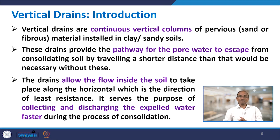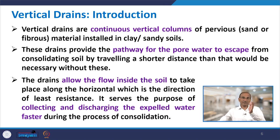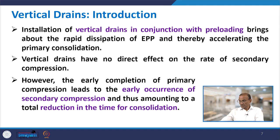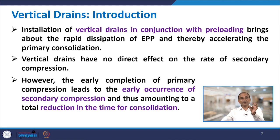These drains allow flow inside the soil to take place along the horizontal direction, which offers the least resistance, collecting and discharging expelled water faster during consolidation. The water travels horizontally into the vertical drains and may also travel vertically. When installed in conjunction with preloading, vertical drains bring rapid dissipation of excess pore water pressure, thereby accelerating primary consolidation.